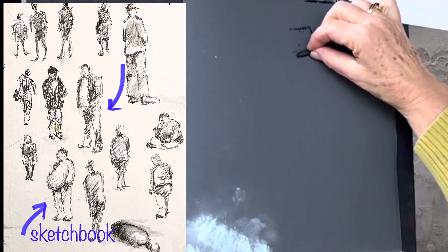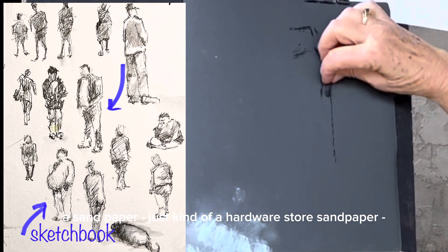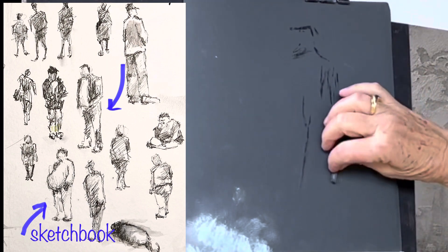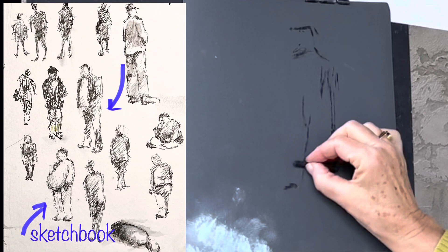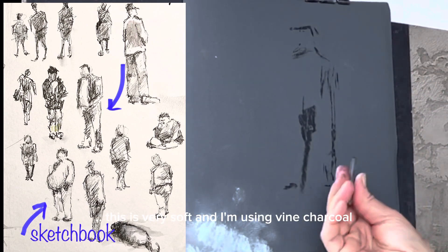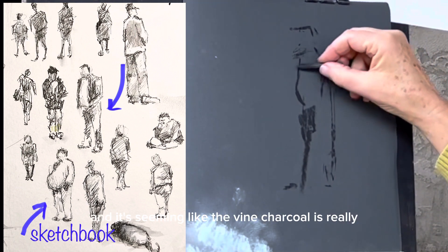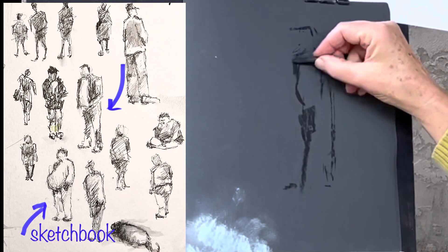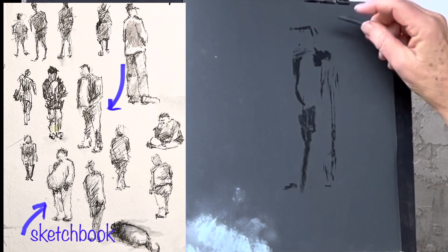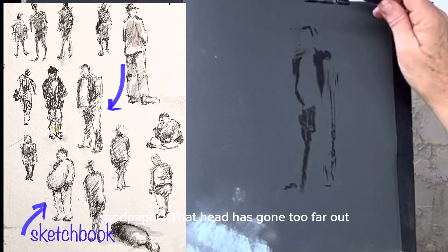I am working on a sandpaper, just kind of a hardware store sandpaper, and I'm trying to keep line. This is very soft and I'm using vine charcoal and it's seeming like the vine charcoal is really sensitive to this particular sandpaper.